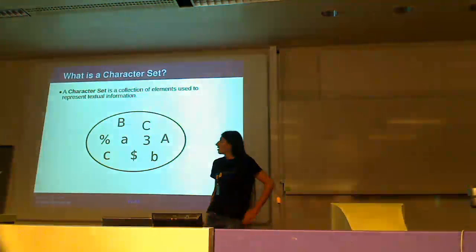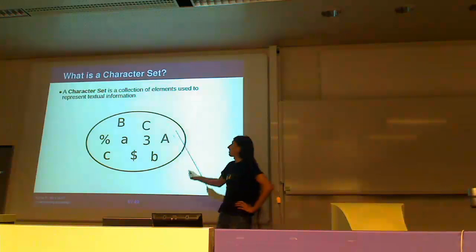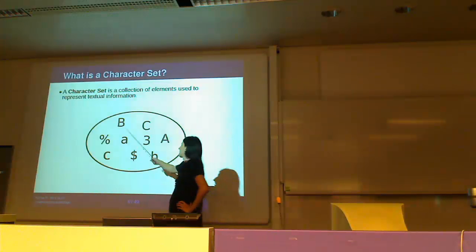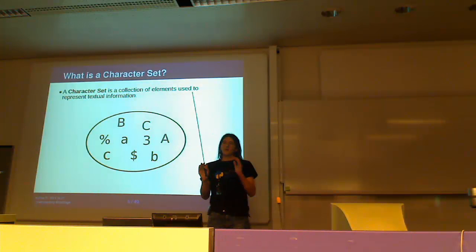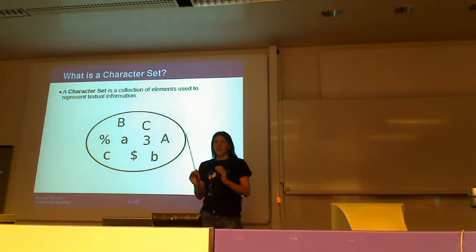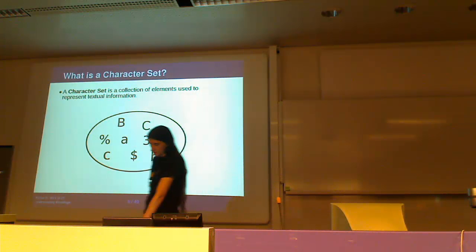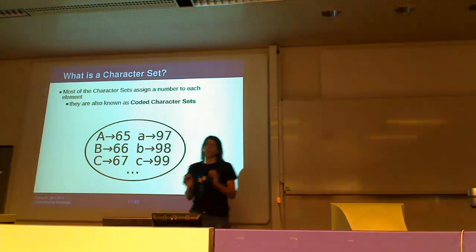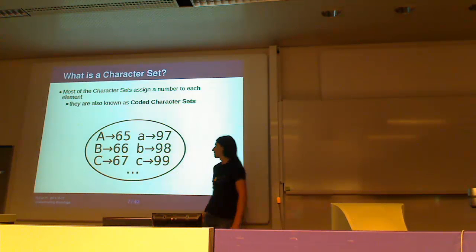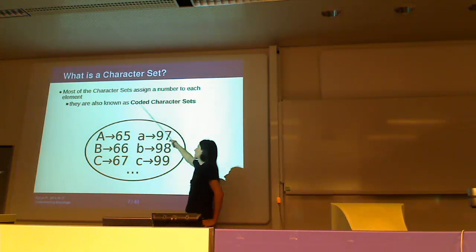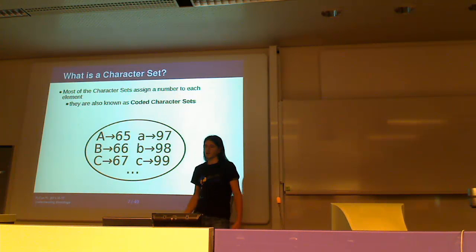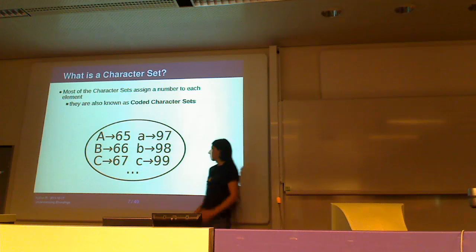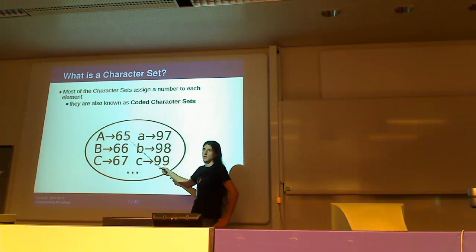Let's start with a character set. The definition says that a character set is a collection of elements used to represent text or information. So we have some elements — like letters, numbers, symbols, and other things — and we put them in a set. Most character sets don't just put elements in a set; they also assign a number to each element. These are technically called coded character sets, where 'coded' means each element gets a number. You can just say 'character set' and everyone understands, because most character sets are coded.